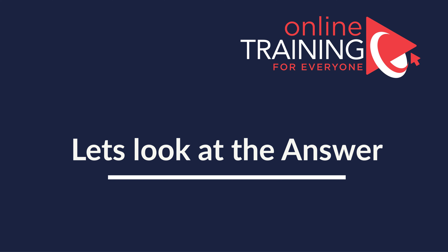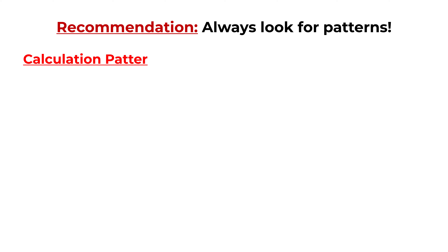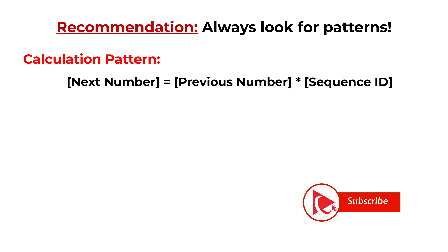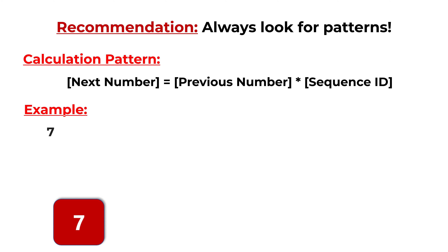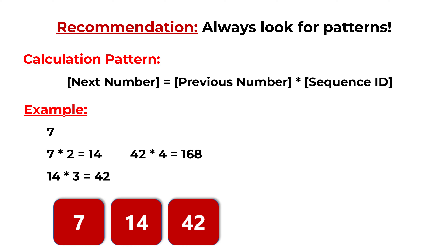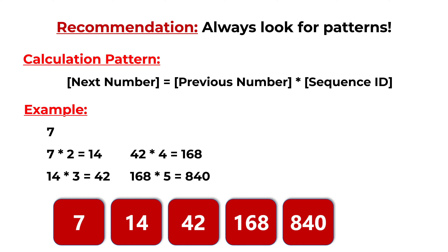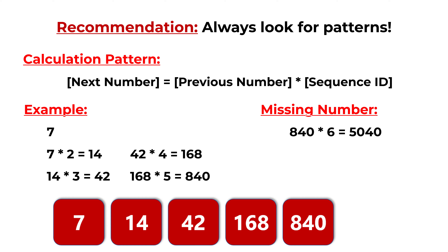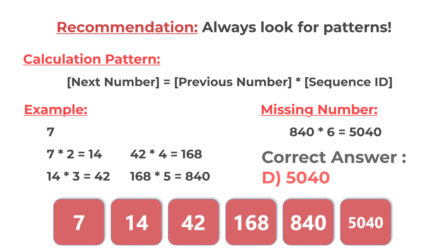Always look for patterns. In this case, the next number is calculated by multiplying the previous number by its sequence position. For example: 7 × 2 = 14, 14 × 3 = 42, 42 × 4 = 168, 168 × 5 = 840. So to calculate the missing number, multiply 840 by 6, which gives 5,040. The correct answer is choice D, 5,040.